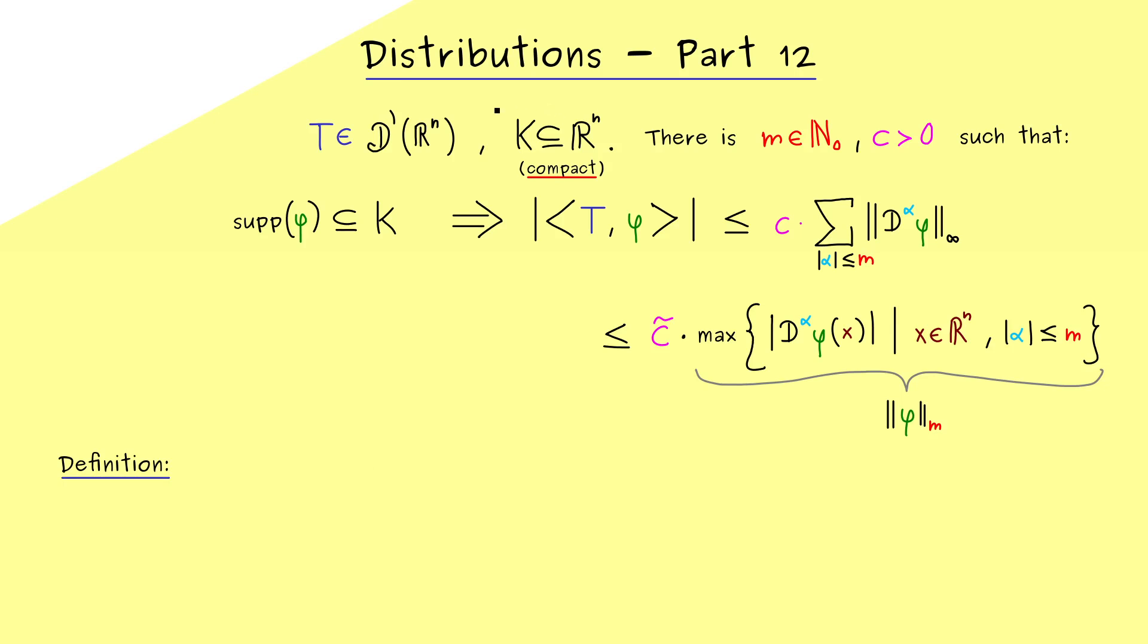So instead of saying that for each compact set K we find constants m and c, such that for all test functions φ we have this estimate, now we want to say that there is such a constant m, such that for all compact sets we have the thing. And if we have exactly this, we call T a distribution of finite order. Or shorter, you could say a finite order distribution.